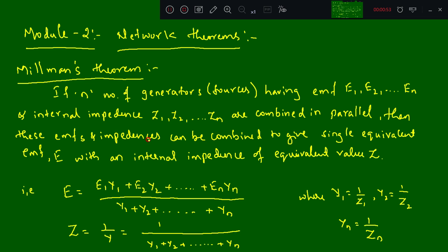According to the statement of Millman's theorem, we can write it as E equal to E1 Y1 plus E2 Y2 plus till En Yn divided by Y1 plus Y2 plus till Yn. So this Y1 we can represent as 1 by Z1, Y2 as 1 by Z2, and Yn as 1 by Zn.